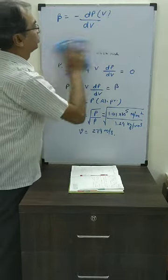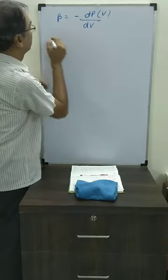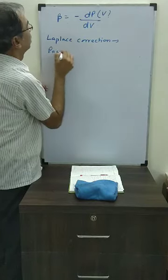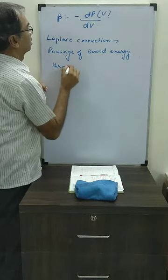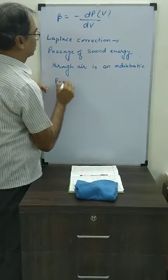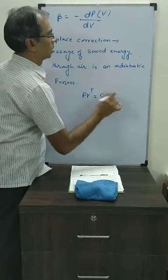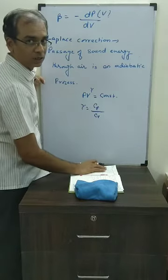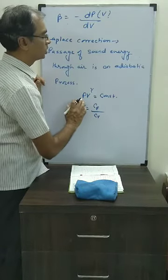There was a correction called Laplace correction. Laplace said that the passage of sound energy through air is an adiabatic process. The equation of the adiabatic process is PV to the power gamma equals constant. Gamma is the adiabatic coefficient and its value is Cp by Cv, where Cp is specific heat at constant pressure and Cv is specific heat at constant volume.